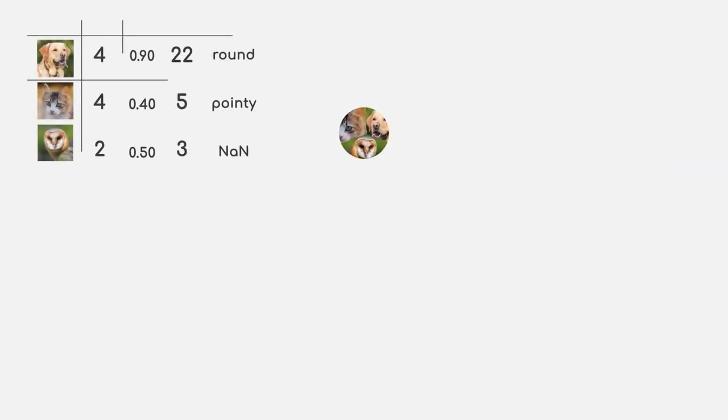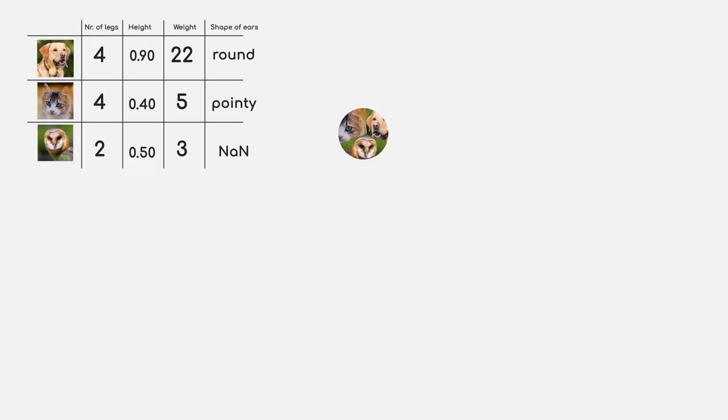Looking at our example dataset of dogs, cats and birds, what do you think would be a good feature to start with? Well, let's pick weight as a first example. We could argue that dogs are usually bigger than cats and birds and design a rule that says, if weight is larger than 20 kilos, then it's a dog. There can still be some types of birds or even cats that also fall into this category. So, this sounds good as a starting point, but maybe we can find a better split.